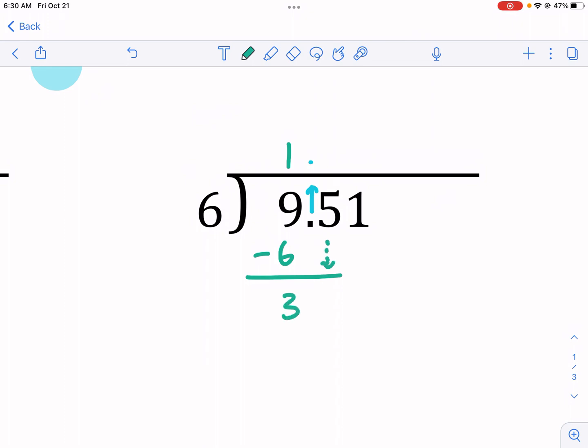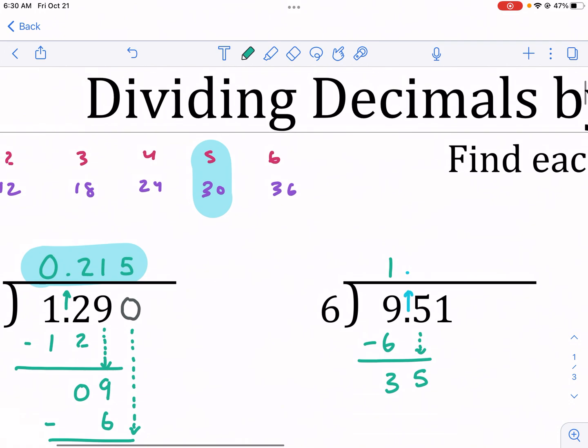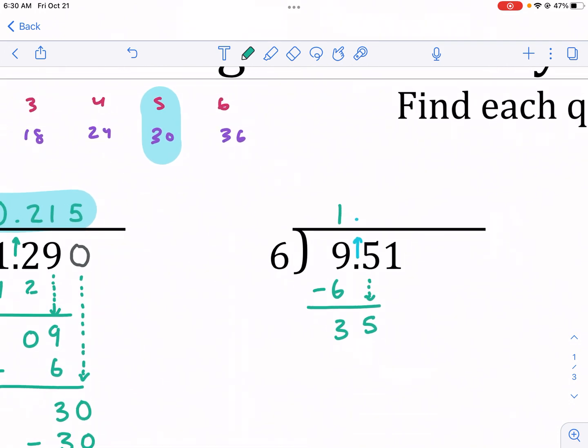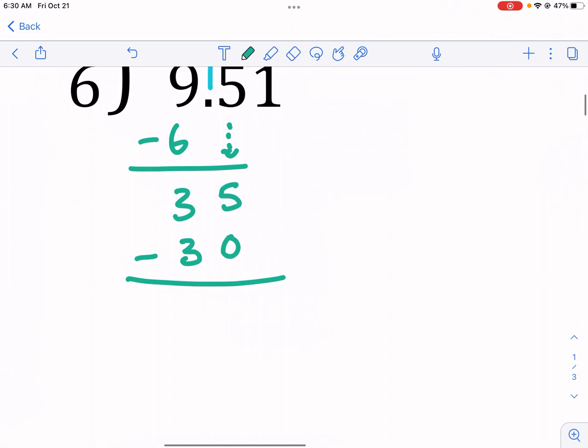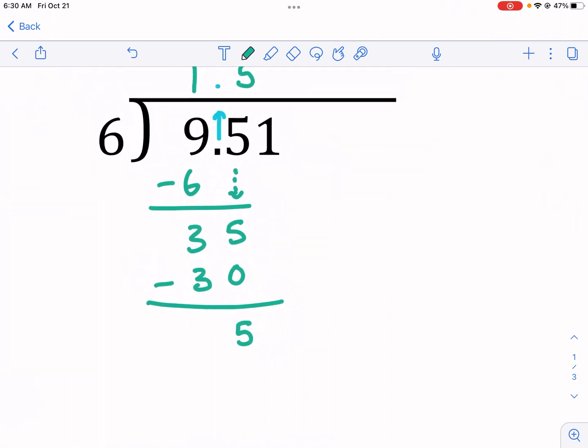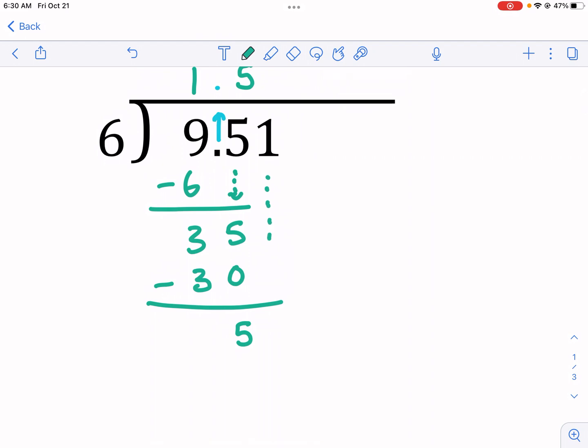I went ahead and did that, and now I can continue to do what I was doing. 6 goes into 9 one time, and that is 6. I multiply the 6 times the 1. Now, I find out how much is left over. It's 3. I drop down the next number. We're not just talking about 6 into 9. We're talking about 6 into 9.51, so I drop down the next digit. I know 6 goes into 35. It doesn't go in exactly, but it goes in 5 times. Now, when I multiply 6 times 5, I get 30.